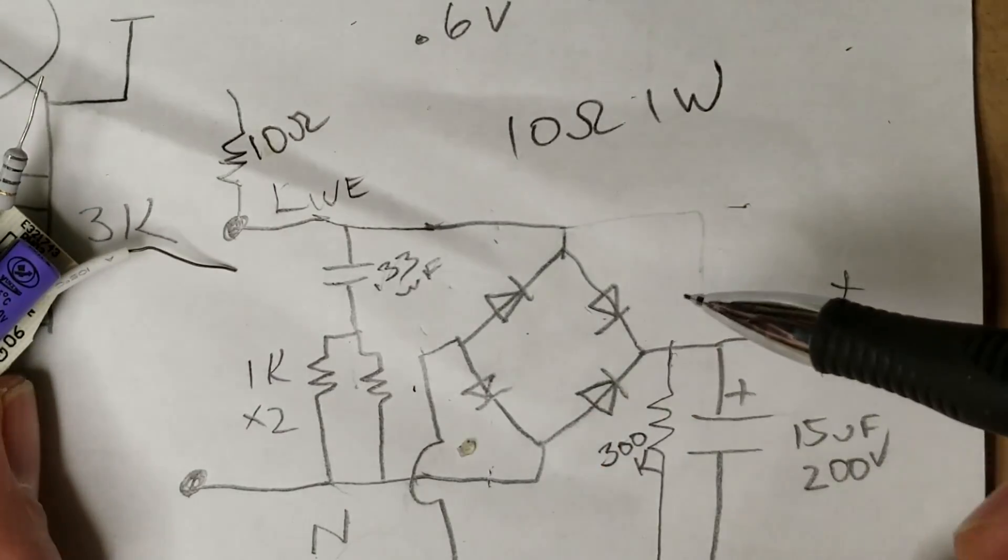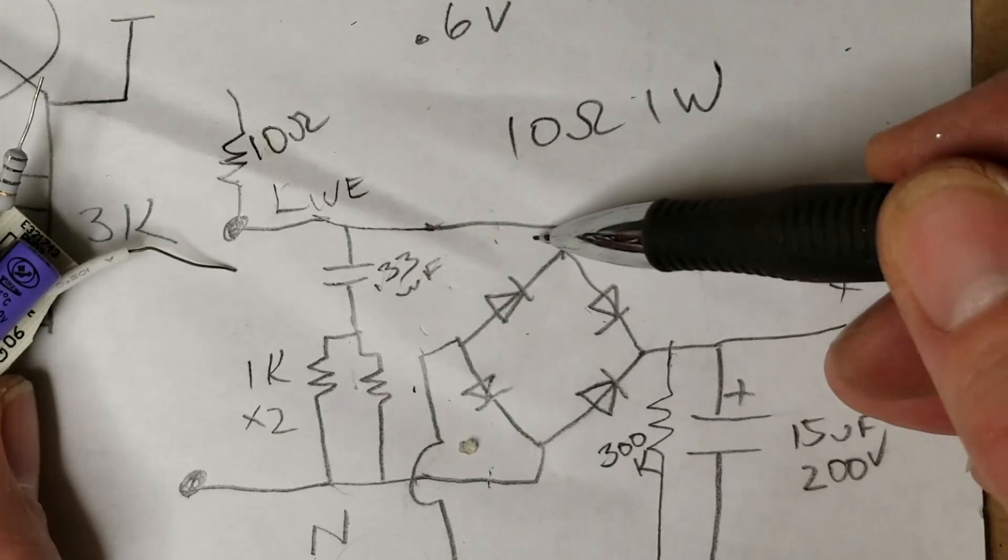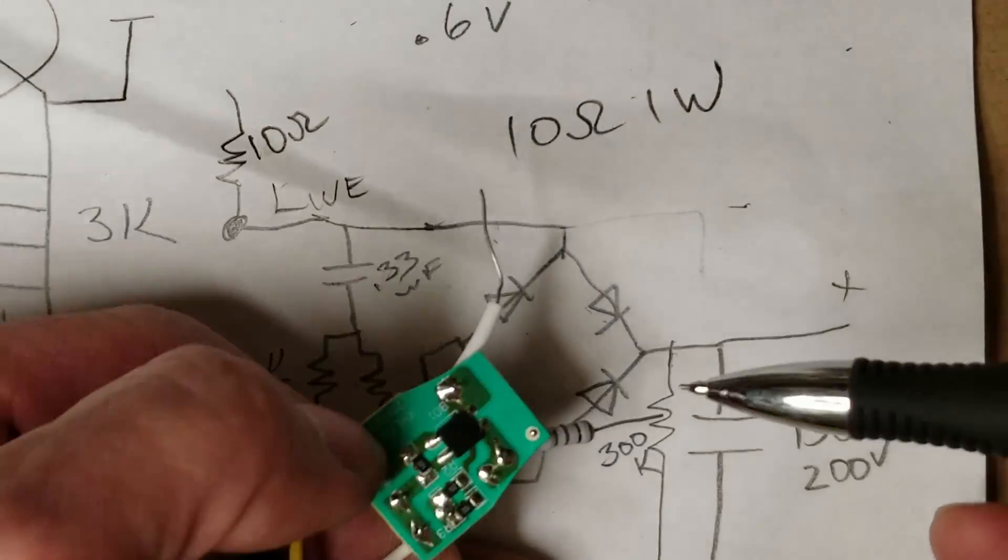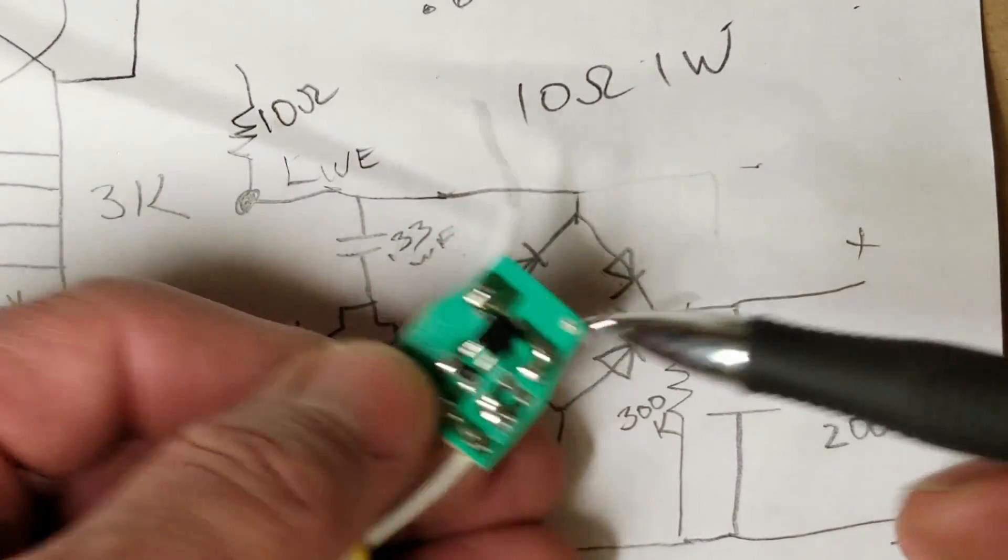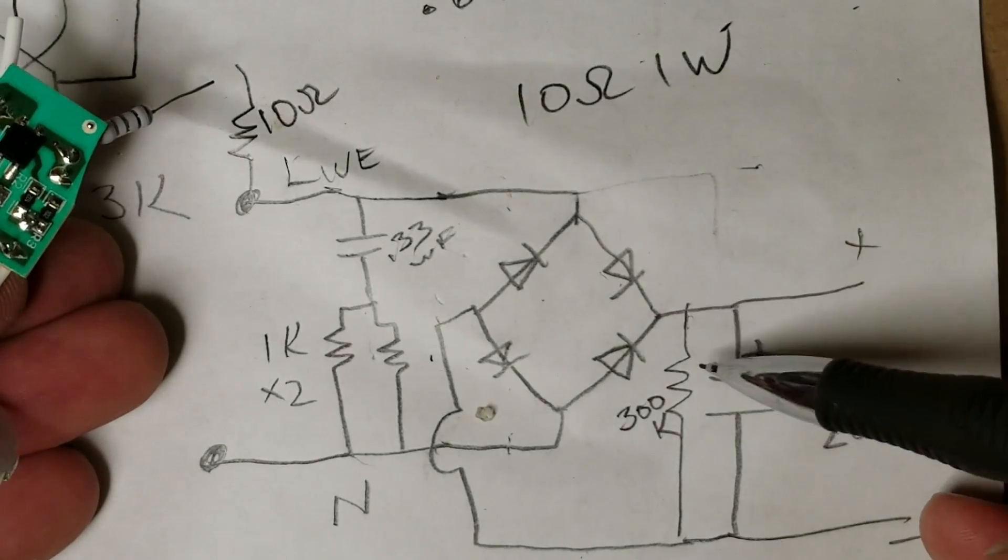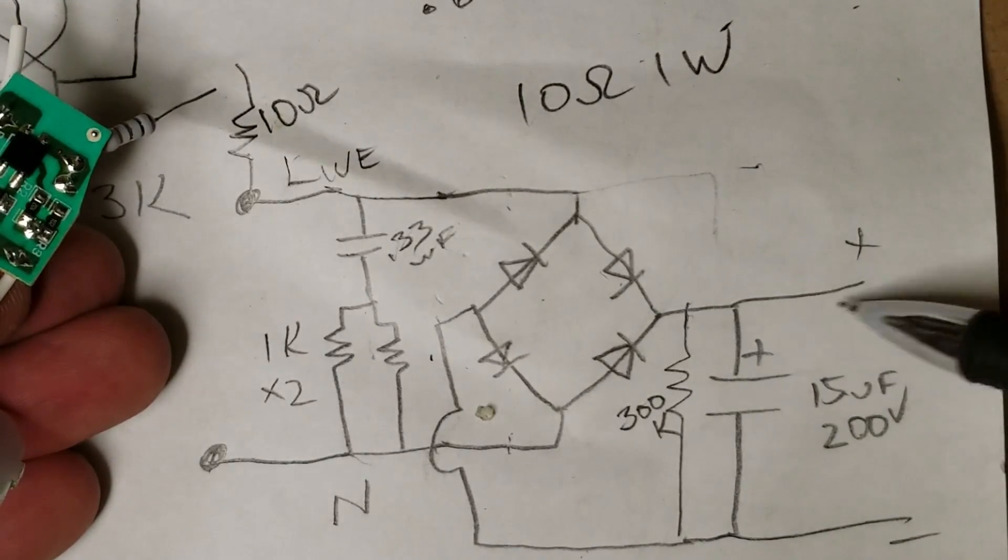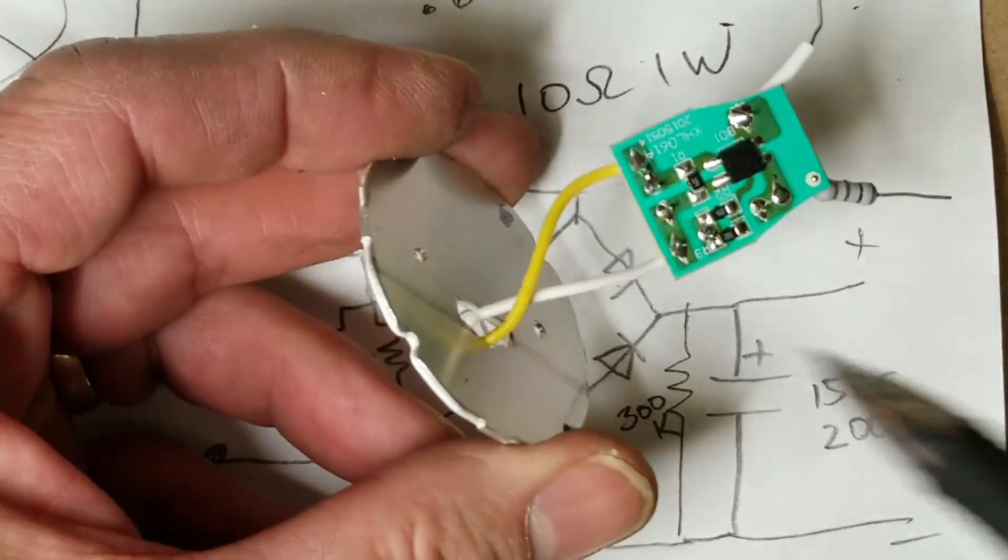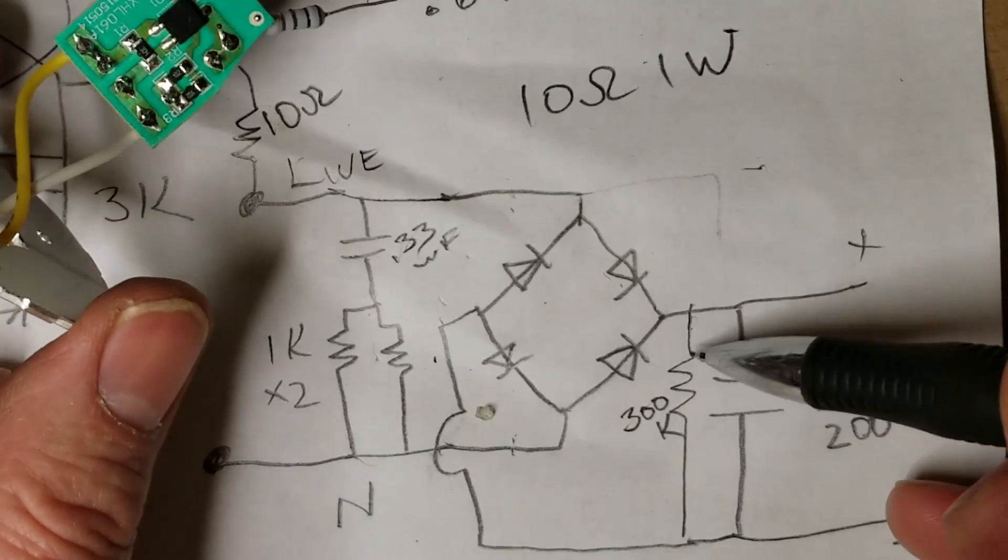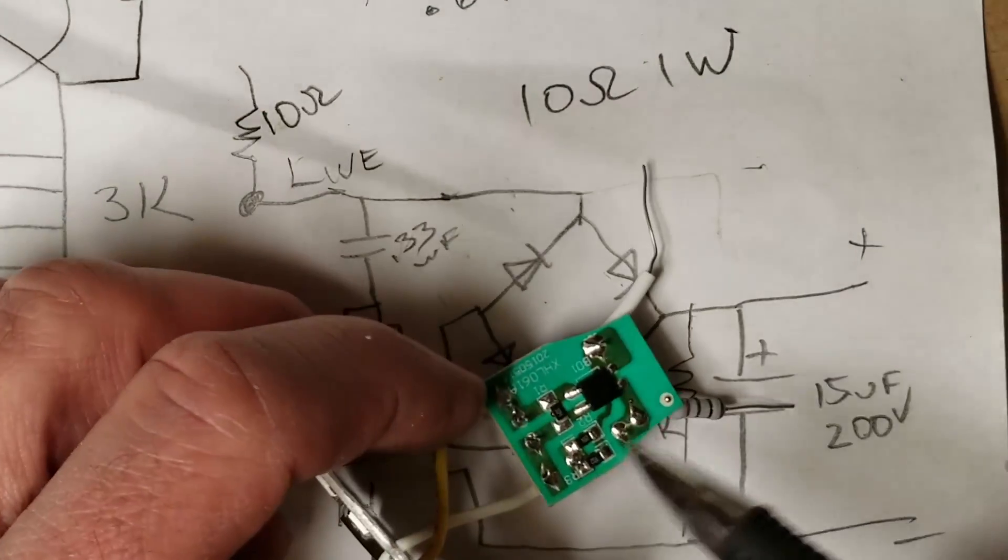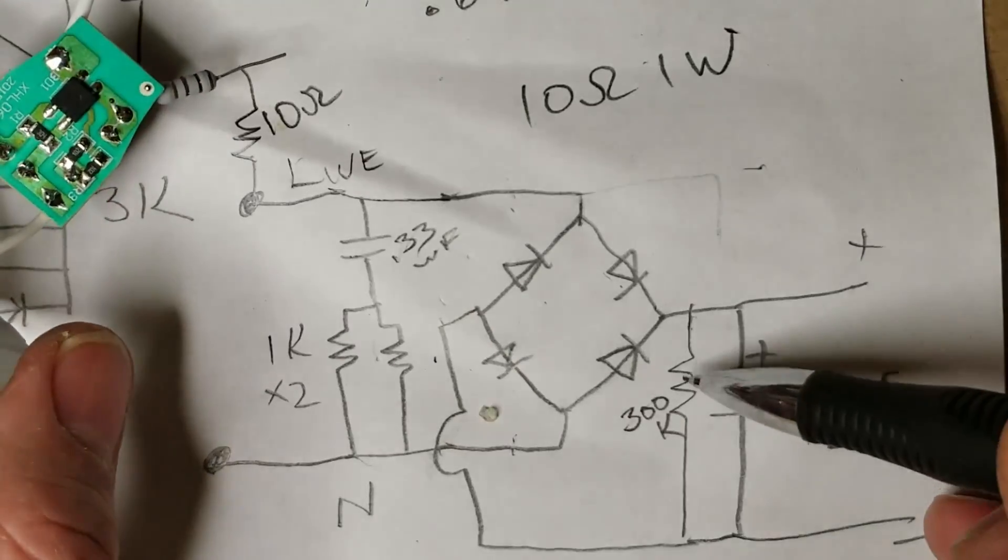Anyhow the live through a 10 ohm resistor into the input of a full bridge rectifier right here. Out of the full bridge rectifier into a 15 microfarad 200 volt capacitor and then the leads from there go up to the circuit board which is what we saw over here just a moment ago.